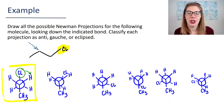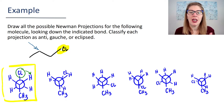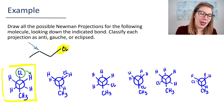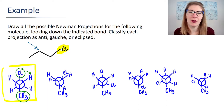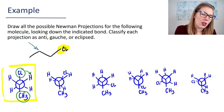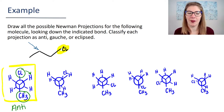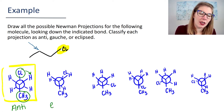Once you're certain that you have drawn all the same Newman projections as me, let's go back and classify these as anti, gauche, or eclipsed. The first one is going to be anti because the two big circled groups are opposite one another. So this is a form of staggered conformation, and we call it anti.